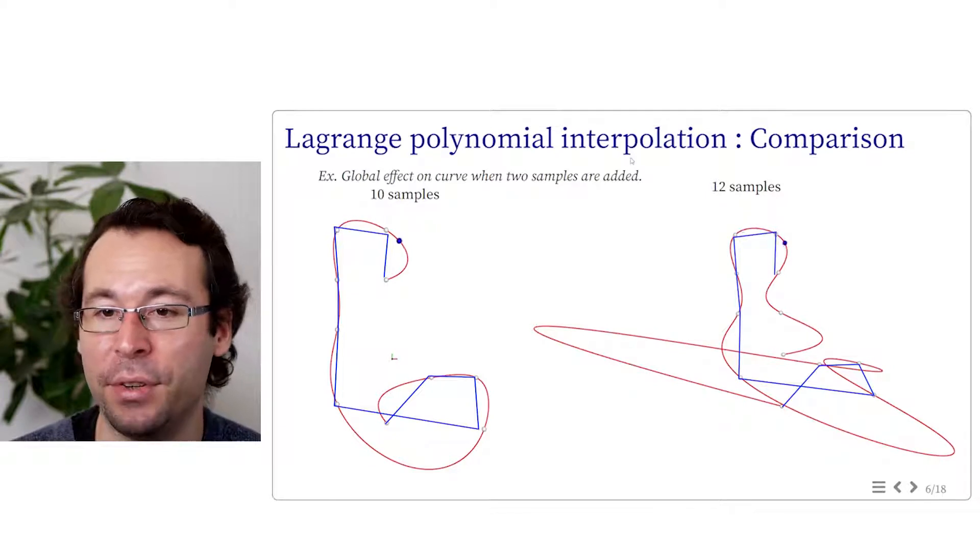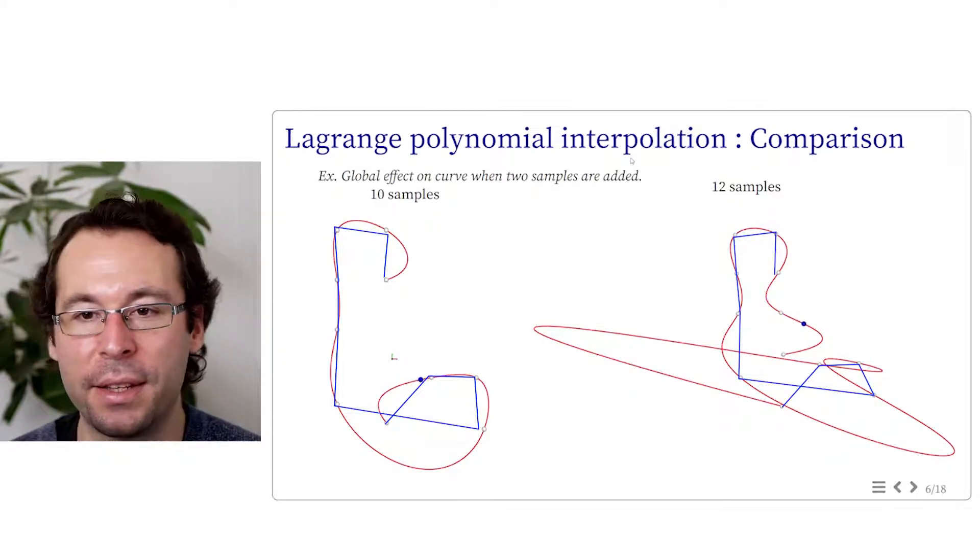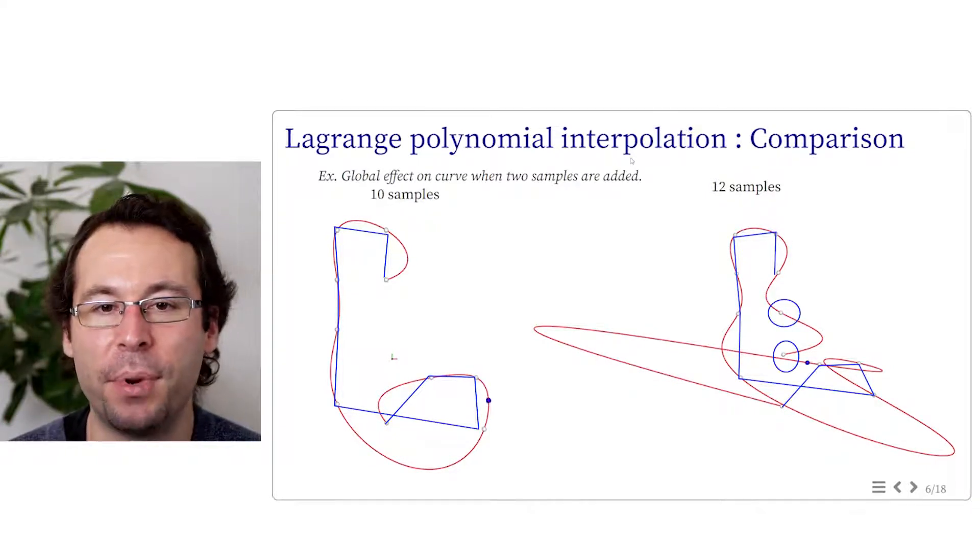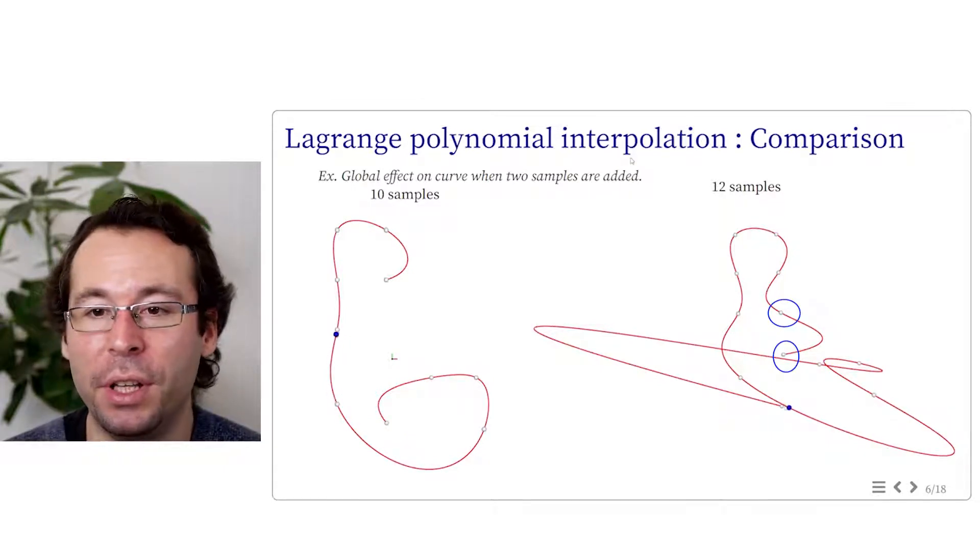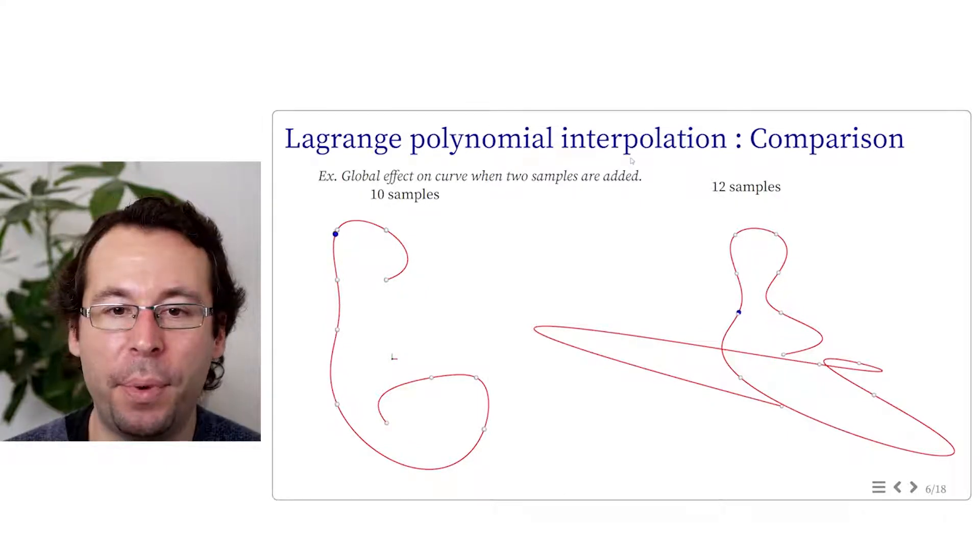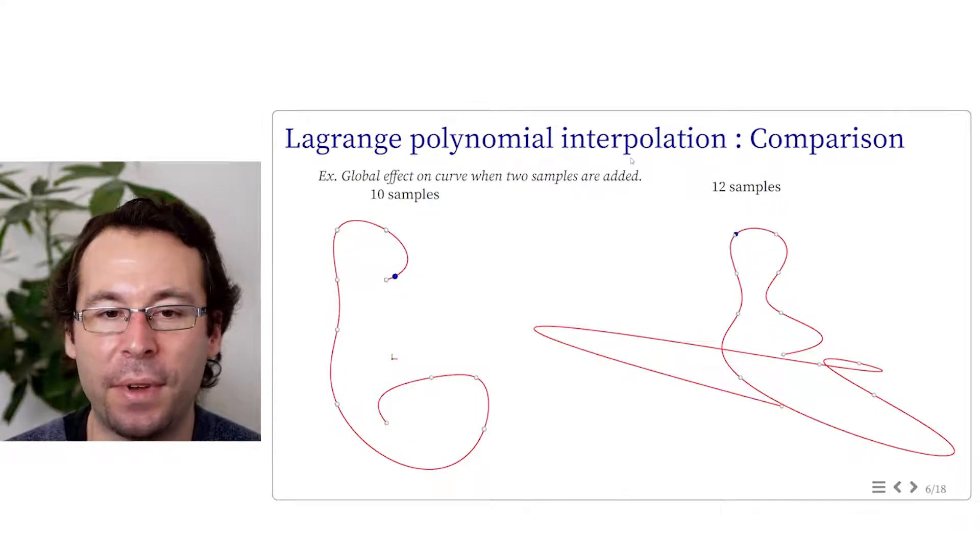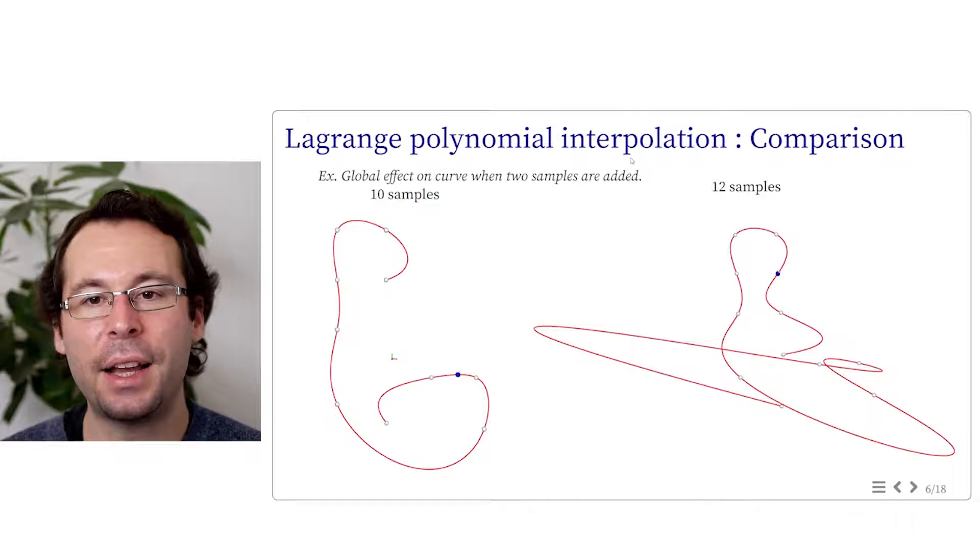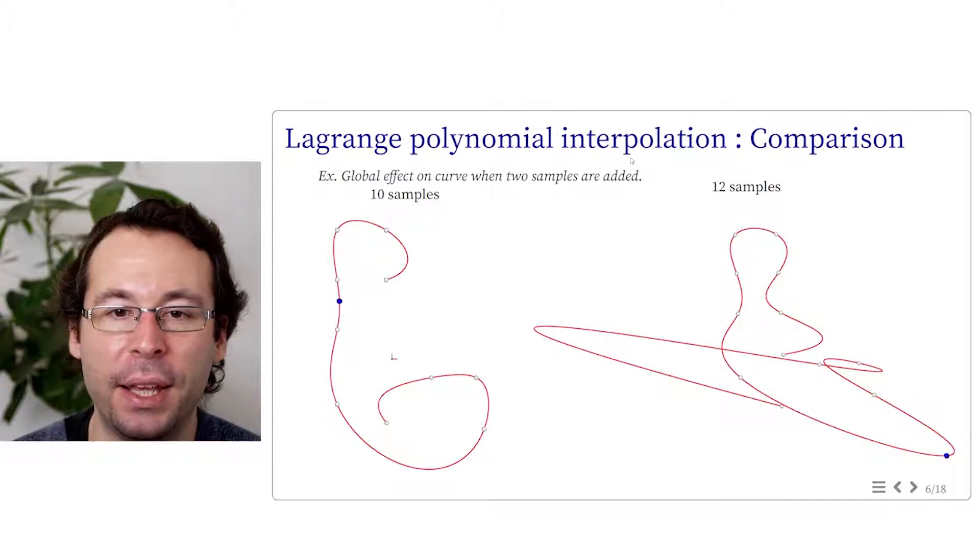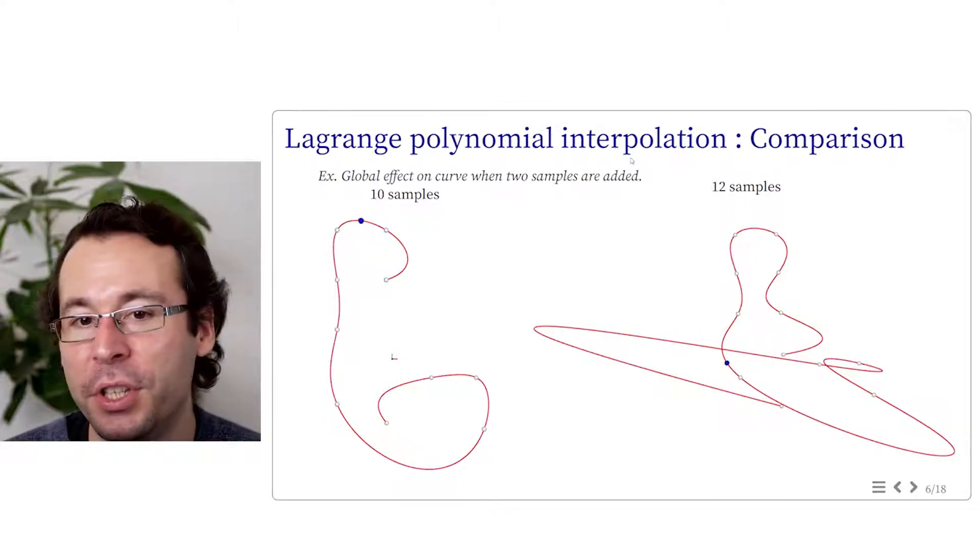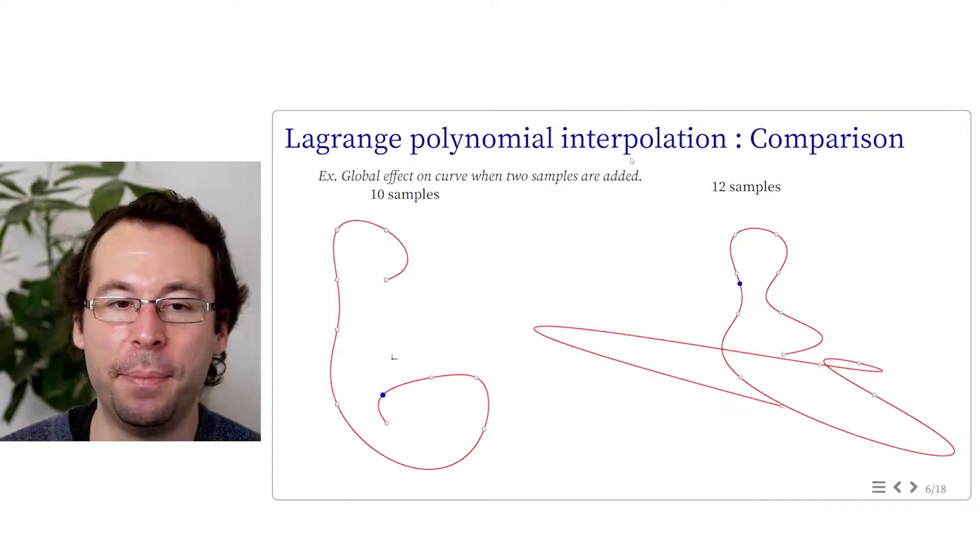This example shows the use of Lagrange polynomials when interpolating 10 samples and then 12 samples. Note that the first 10 samples are the same on the left and on the right. We only add two more samples at the end. So we would expect that the trajectory only continue further. But we can see that actually the curves are totally different and large oscillations appear between the samples. This issue often arises when we deal with polynomials of high degree. For this reason, Lagrange interpolation is not used in practice.